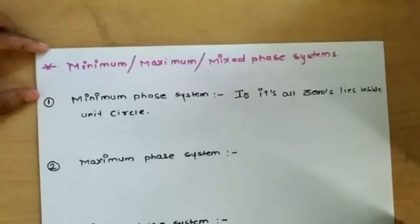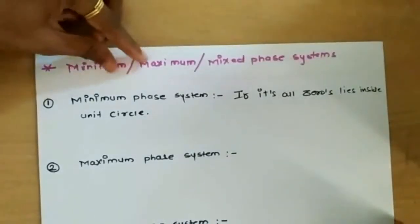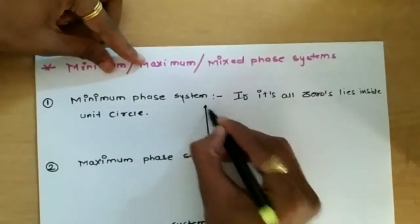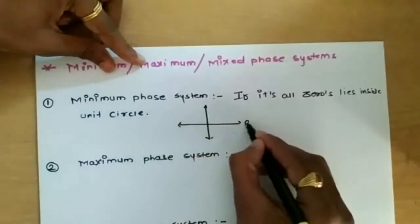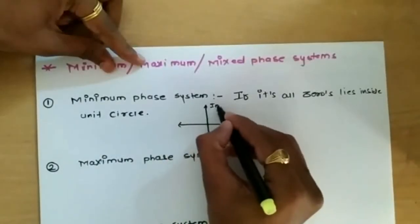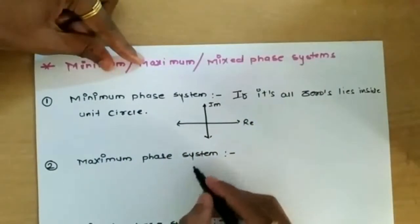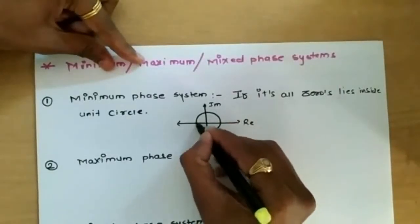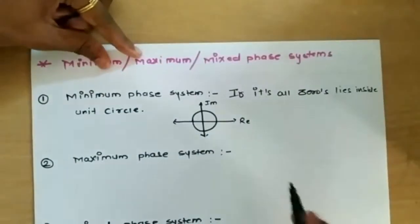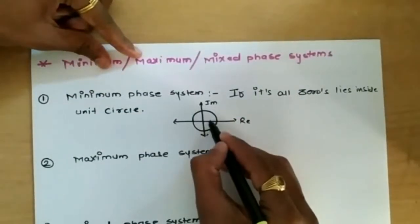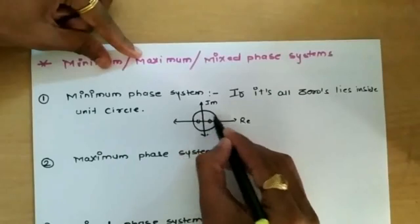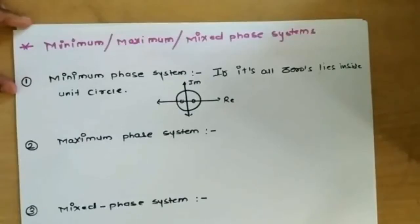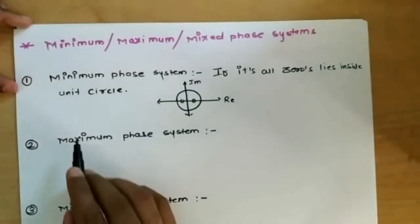Let us sketch this. We consider the real axis of Z and the imaginary axis. The unit circle is drawn with radius equal to one. If the zero points lie inside this unit circle, the system is known as a minimum phase system.